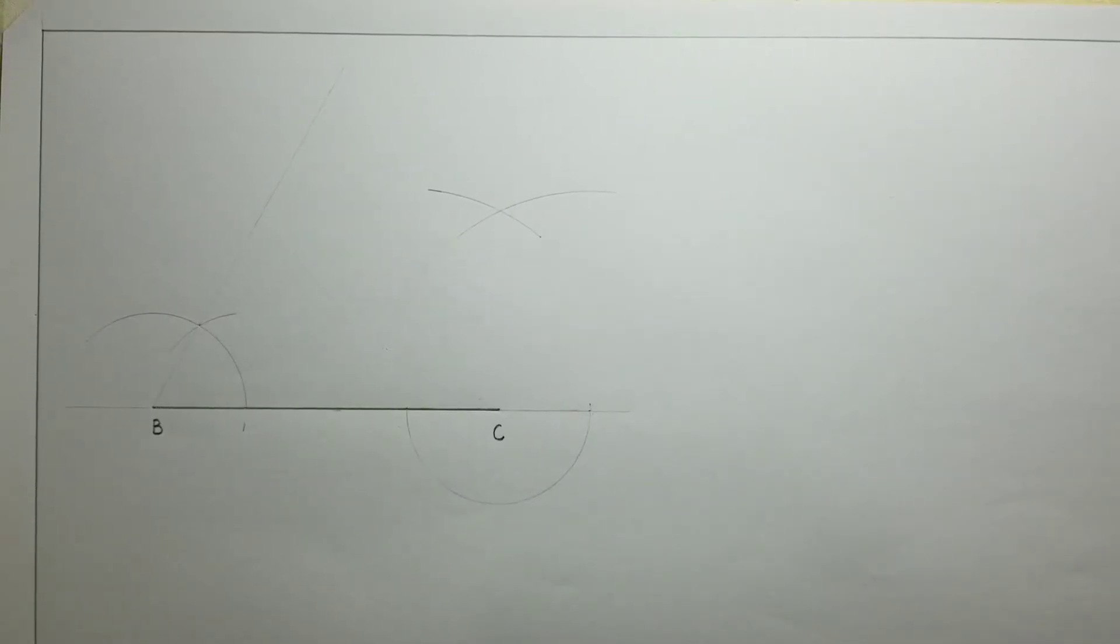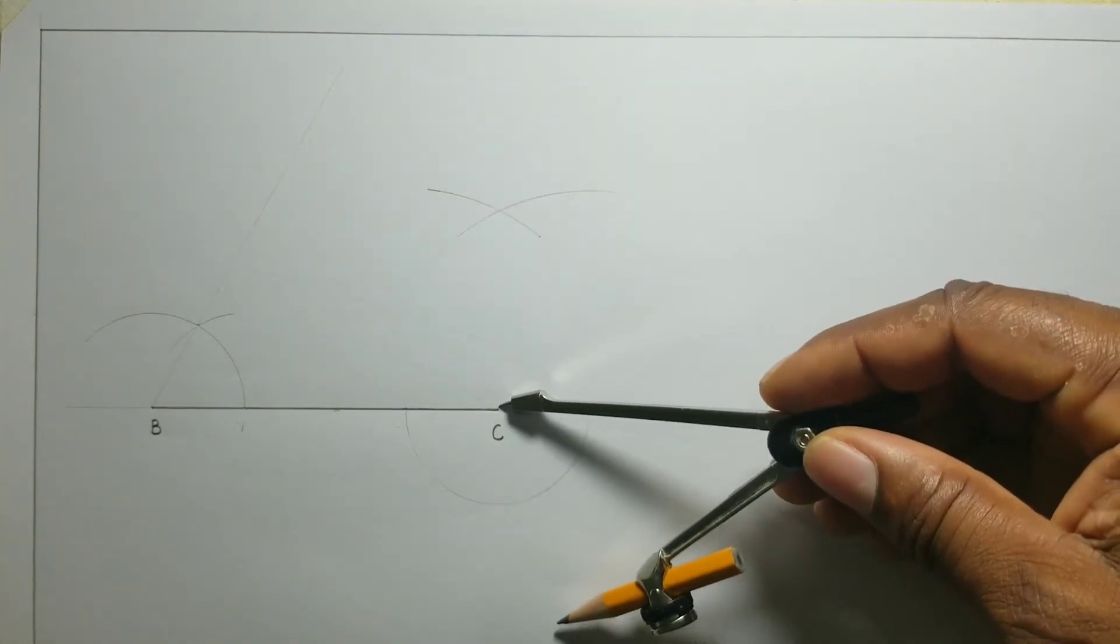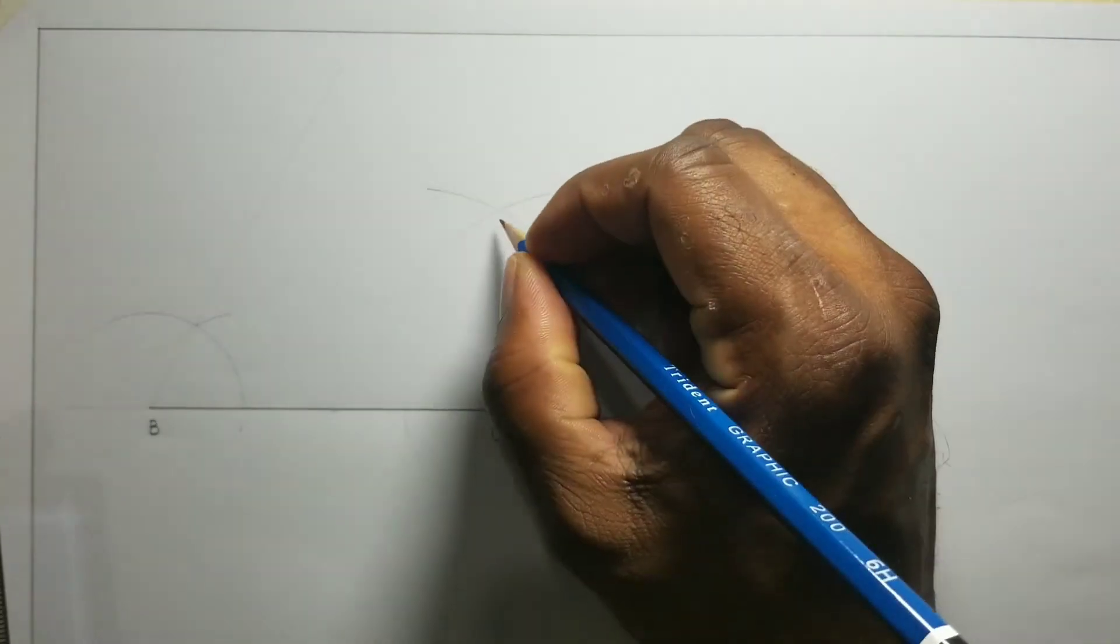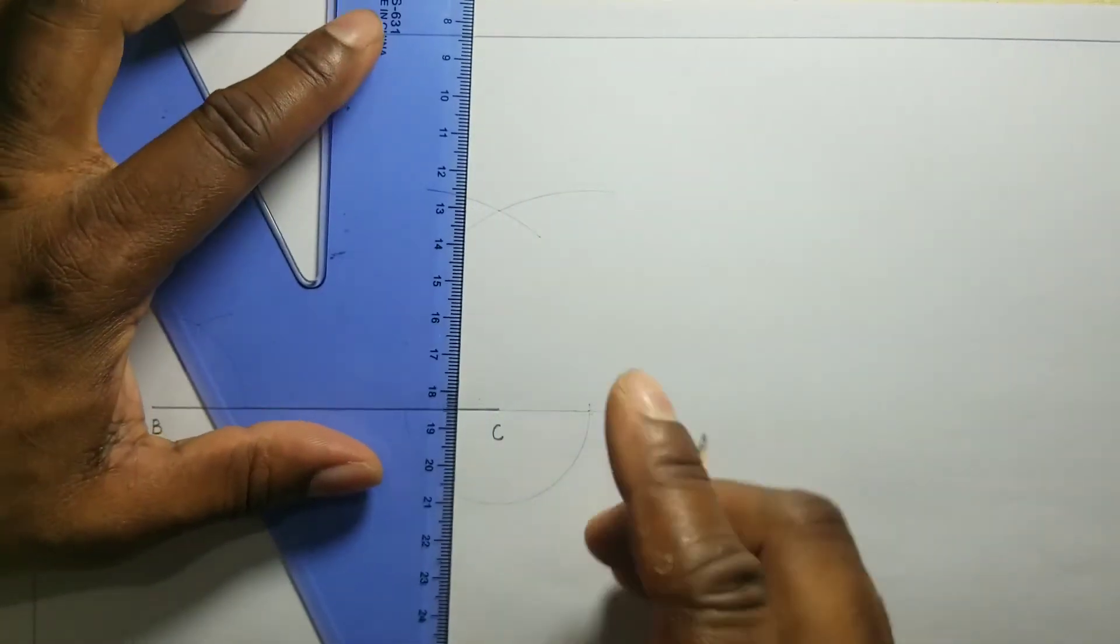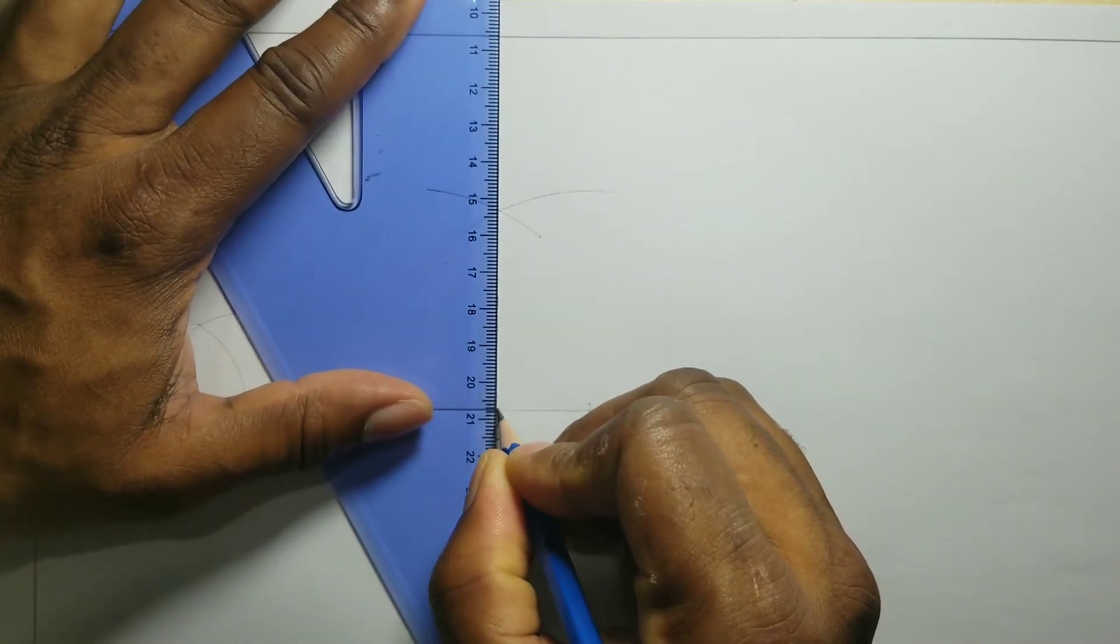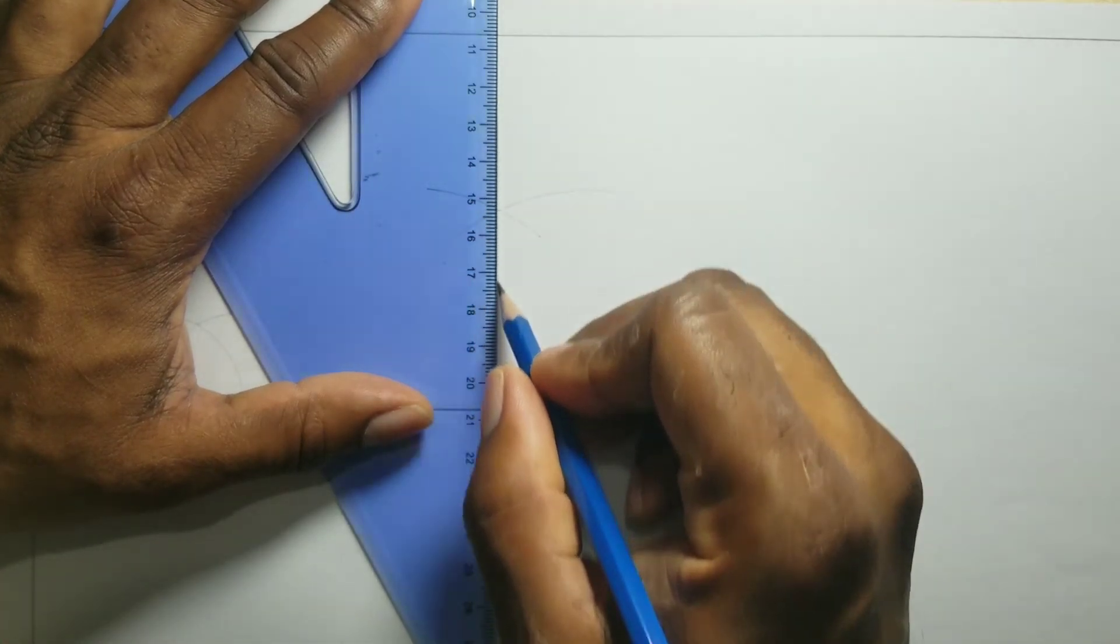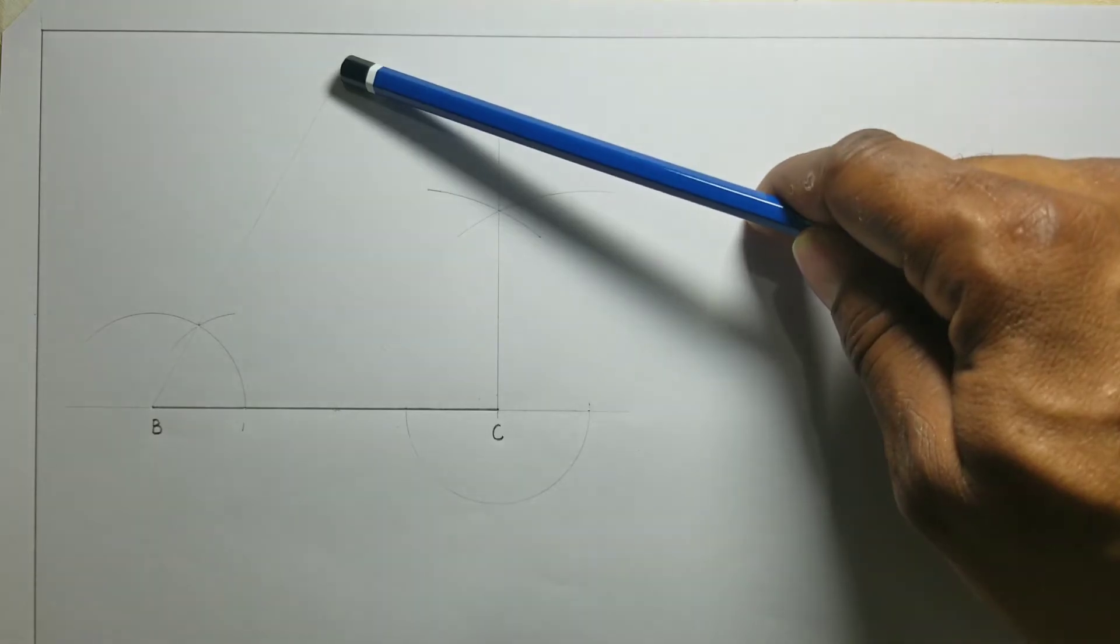I will now draw a line from the intersection of the arcs to point C. I will label this point D.